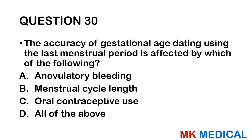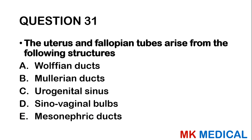Question thirty: The accuracy of gestational age dating using the last menstrual period is affected by which of the following? A, anovulatory and ovulatory bleeding; B, menstrual cycle length; C, oral contraceptive use; D, all of the above. All of these affect the last menstrual period and its regularity, so the answer is all of the above.